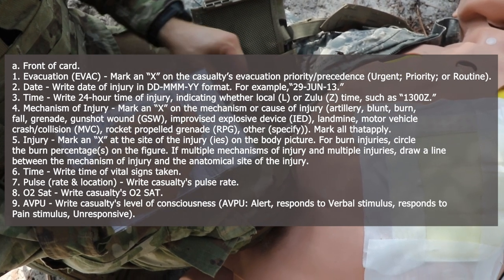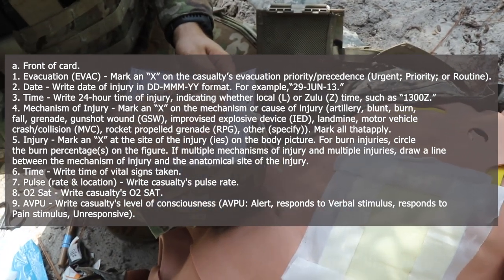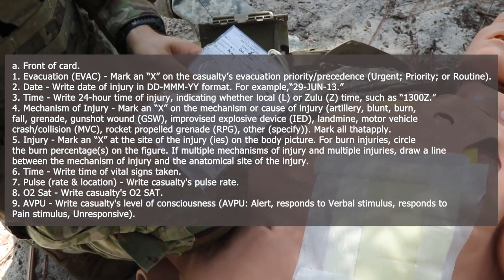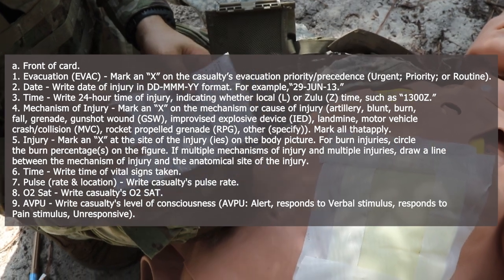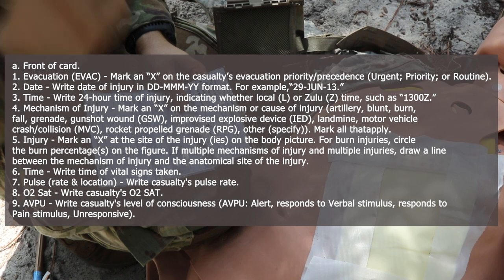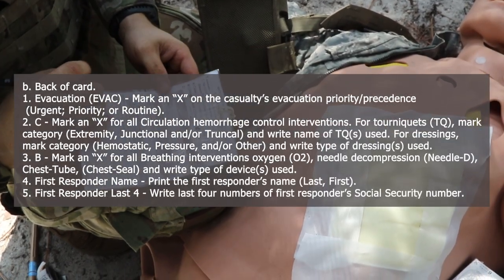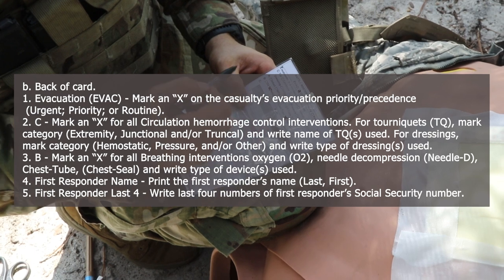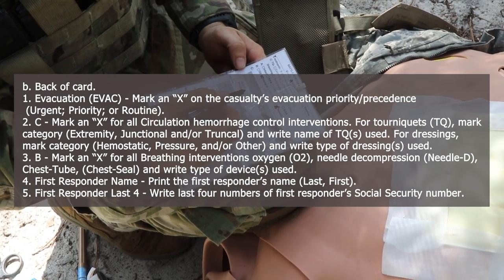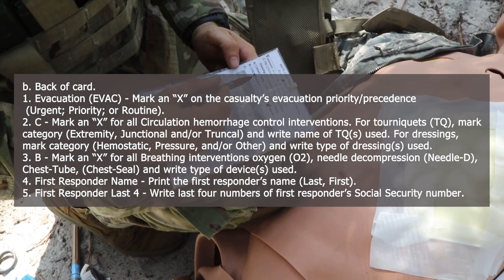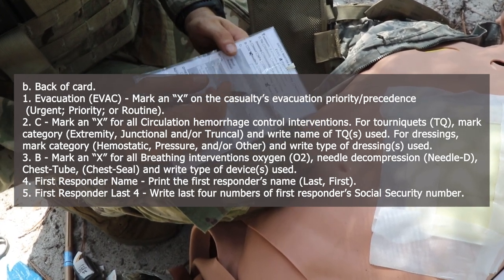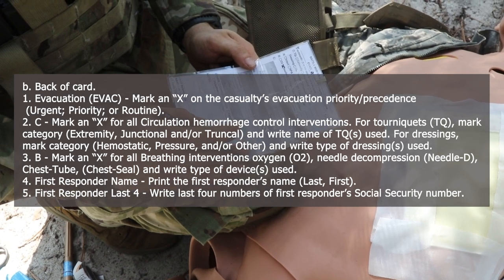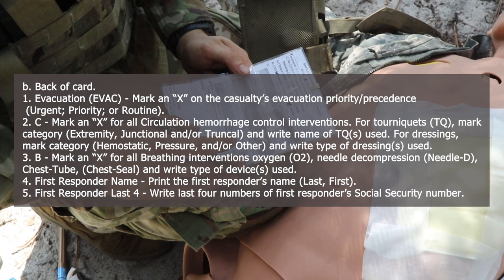At the bottom time block, write the time vital signs were taken. Record the pulse rate and location, and the casualty's O2 saturation. On the AVPU marker, write the casualty's level of consciousness. On the back of the card, mark an X on the casualty's evacuation precedence — urgent, priority, or routine. Mark an X for all circulation and hemorrhage control interventions used. For tourniquets, mark category extremity and write the name of tourniquet used. For dressings, mark category hemostatic, pressure, and/or other, and write the type of dressings used.